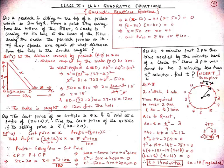Let us suppose that both the snake and peacock have the same common speed. The peacock catches the snake at point D. Since the speeds are equal, the distance travelled by the snake equals the distance travelled by the peacock. Let the distance covered by the peacock, AD, be x meters, and the distance covered by the snake, DC, also be x meters.